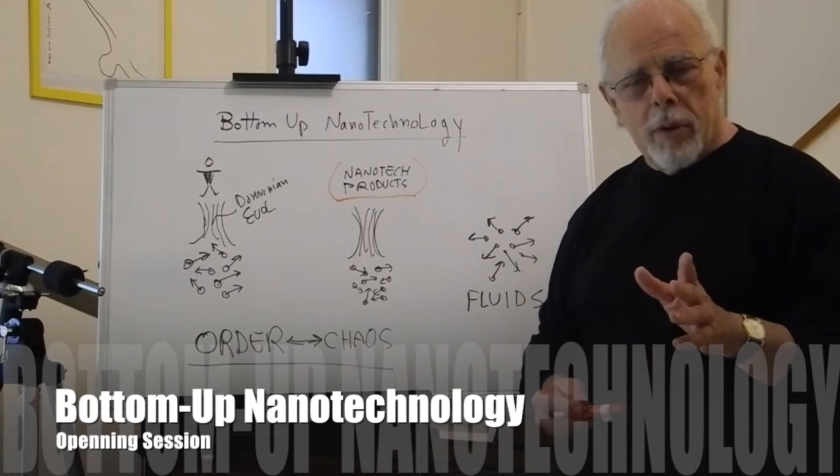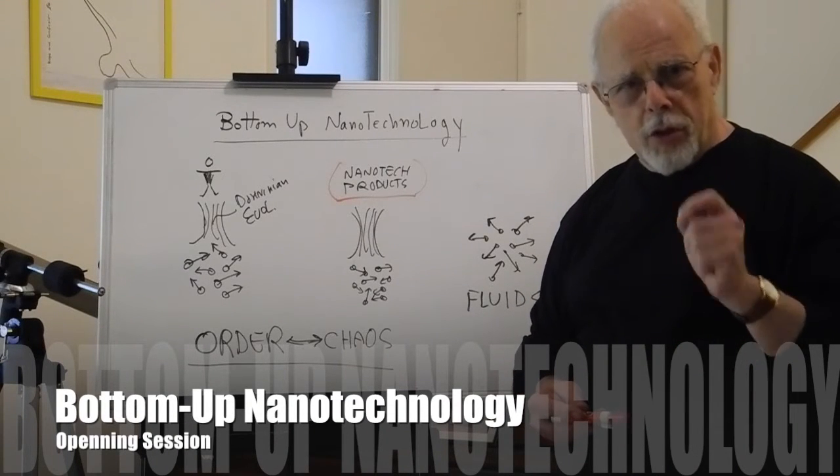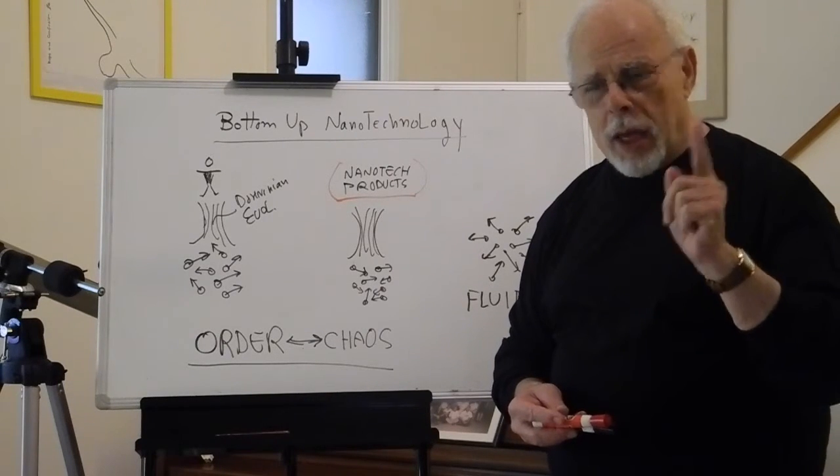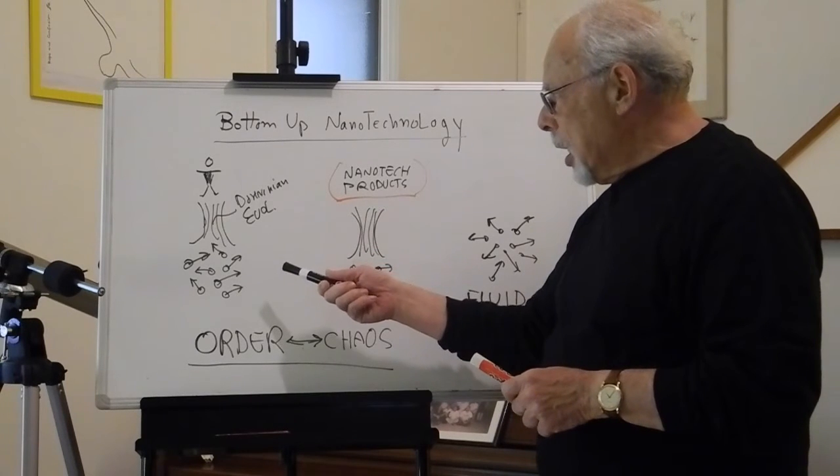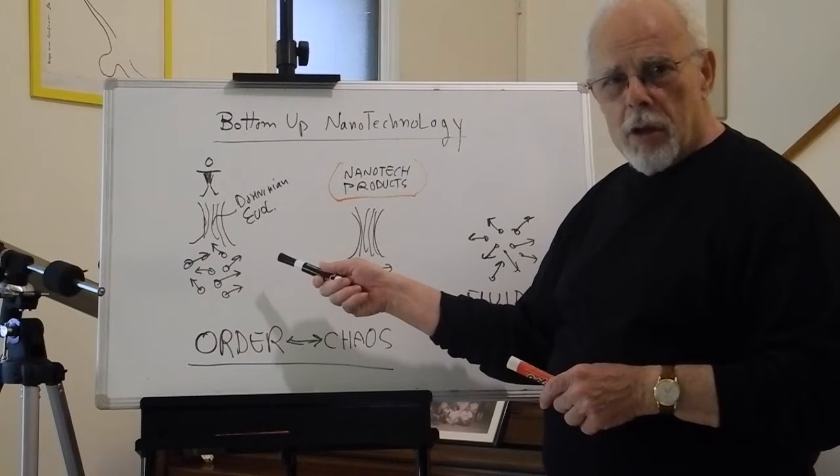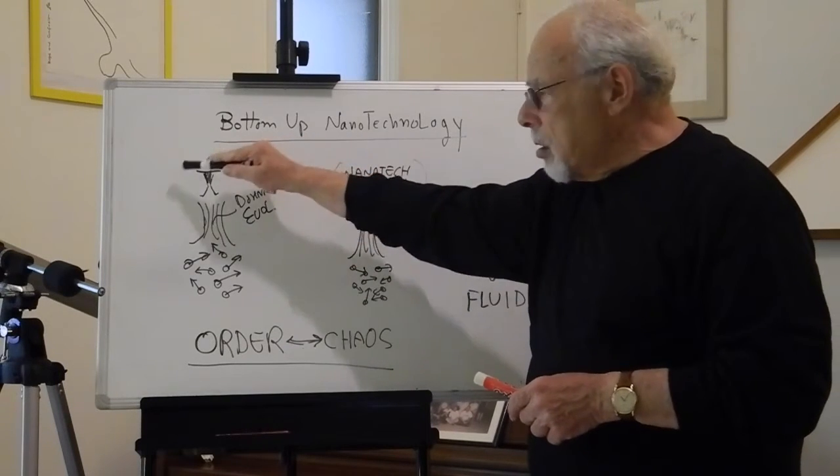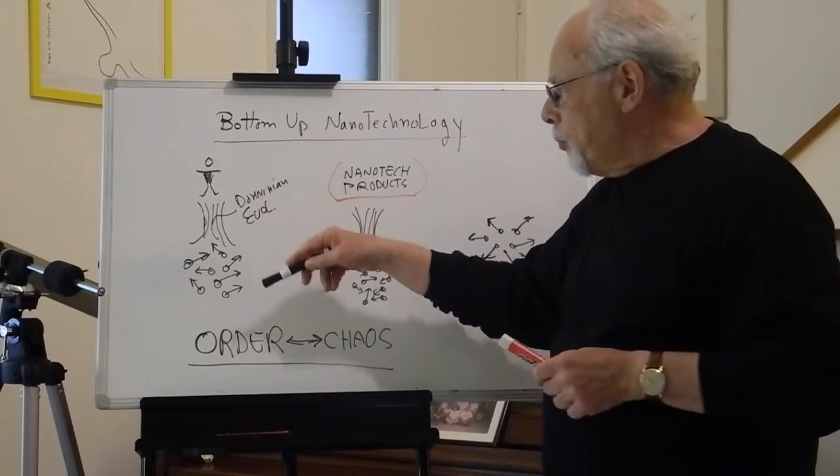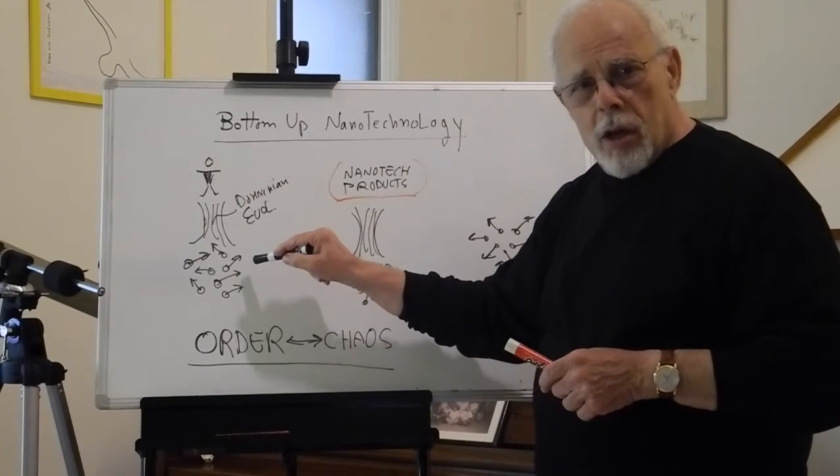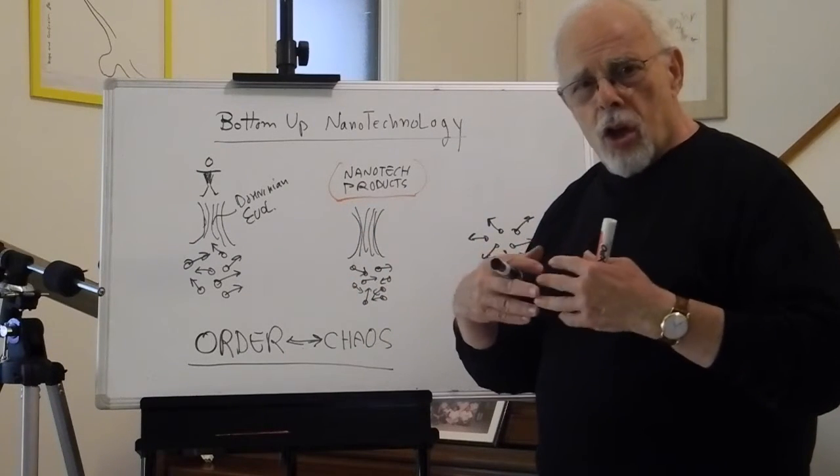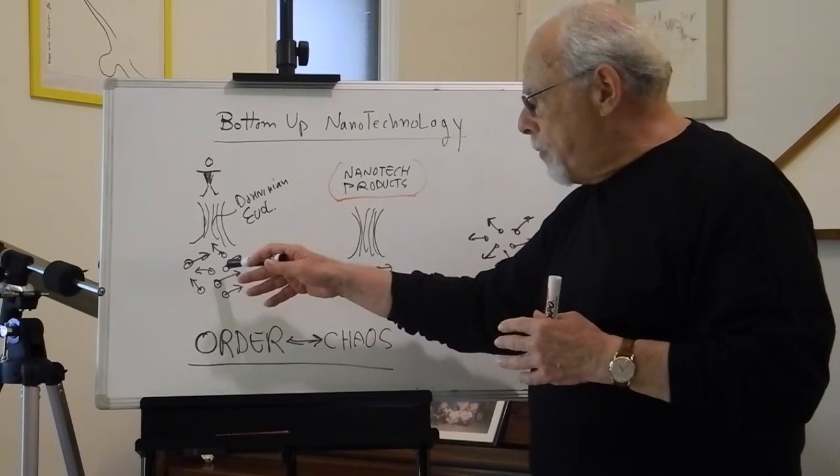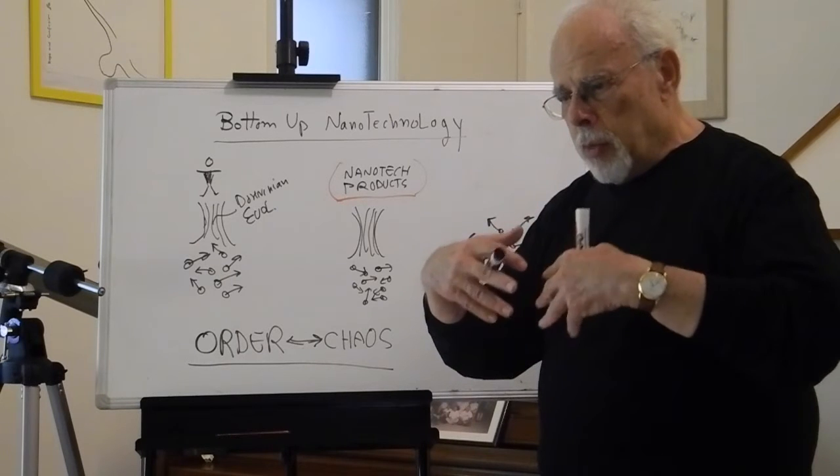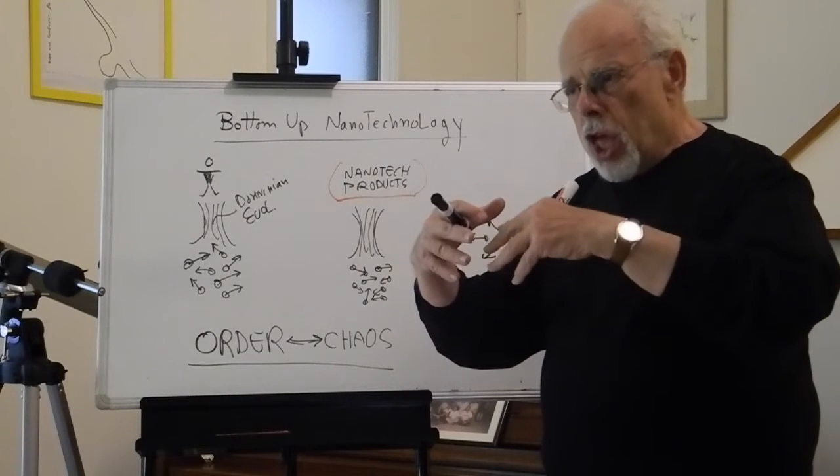Bottom-up nanotechnology is perhaps the most intriguing avenue of science today. Why? Because look at Darwinian evolution—it created us, humankind, through a process of random interaction between individual molecules and atoms that became more and more complicated systems.